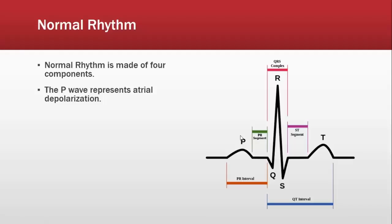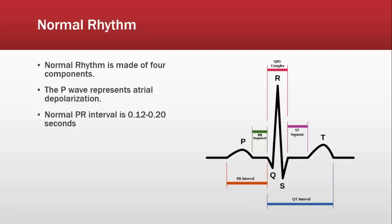The normal PR interval — from P to here — is 0.12 to 0.2. You need to know that number. Have it memorized, because the exam will test you on that. PR interval from P to here is 0.12 to 0.2.